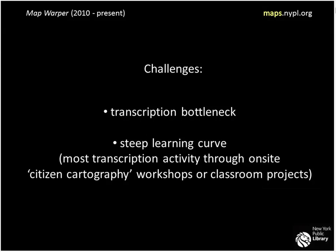About 5,000 map sheets have been warped and 120,000 buildings transcribed. The challenges are that the building-level extraction task is a bottleneck — it's cumbersome and has a steep learning curve both for the task itself and for the platform. Most traction through volunteers has come via on-site workshops in our map division or through classroom collaborations, with some people then working at home especially on warping tasks. There are some power users whose usage logs very much mirror the power user distribution Mia showed.